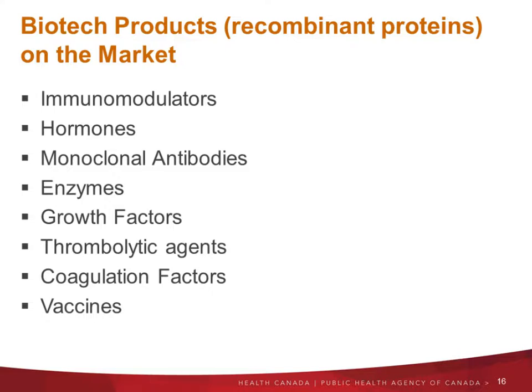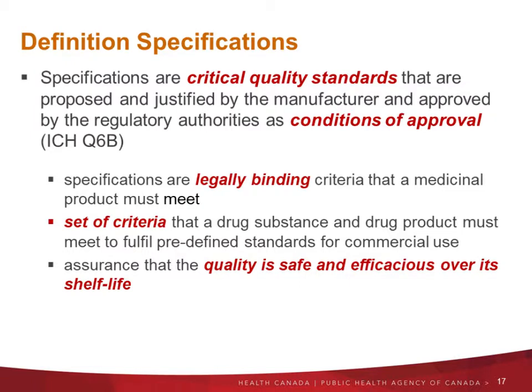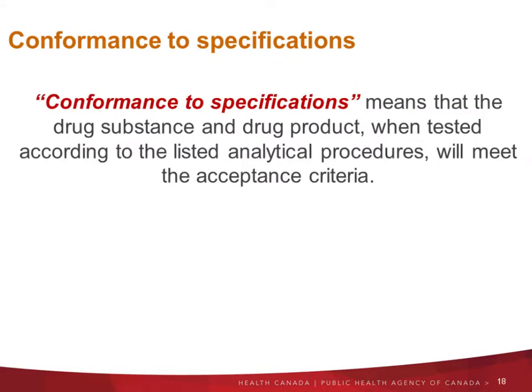This next slide gives some examples of types of biotech products currently on the market. Here is the definition of SPEC in ICH Q6B — the same slide as my colleague's. The key points: it's a legally binding set of criteria. Several tests are listed, and when approved by the regulatory agency, you need to comply with those specs to release your product. It provides assurance that the quality is safe and efficacious over its shelf life. Conformance to specification means that the drug substance and drug product, when tested according to the listed tests, will meet the acceptance criteria.